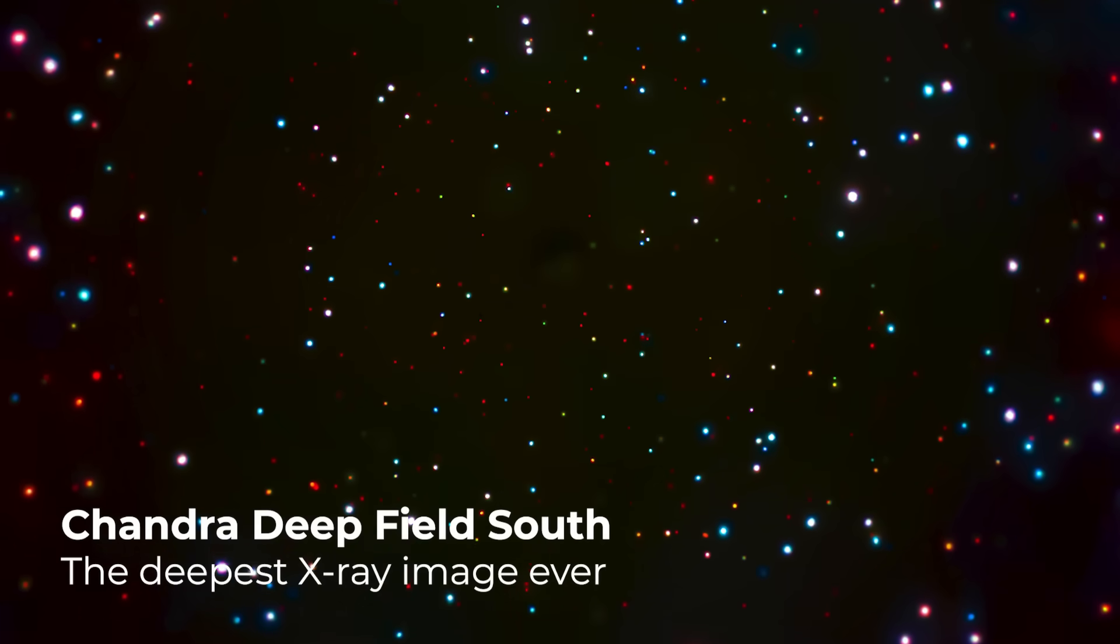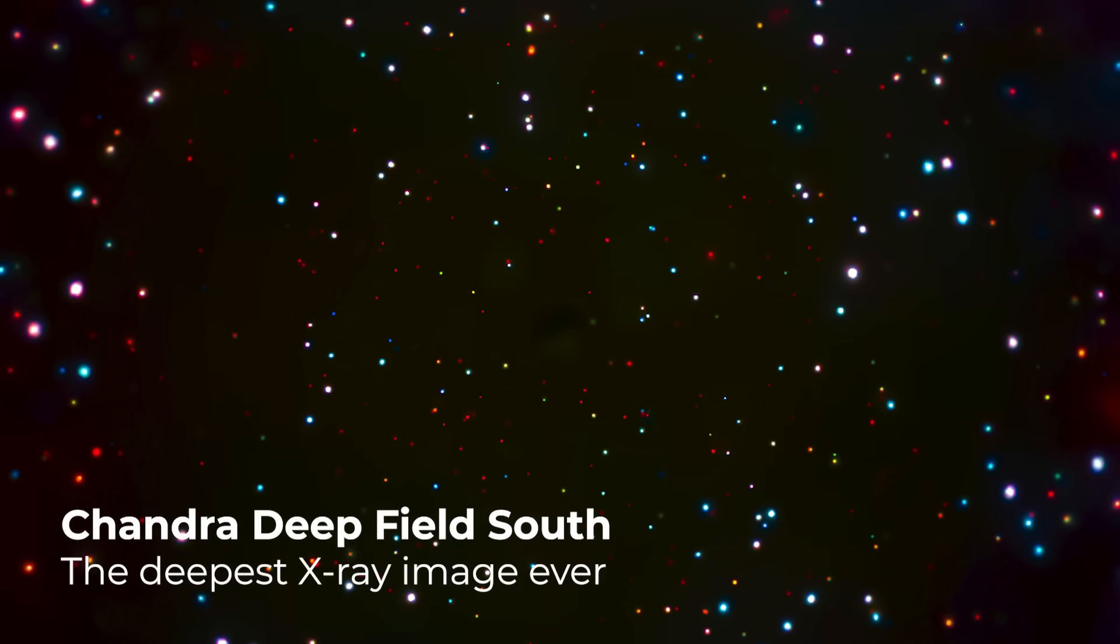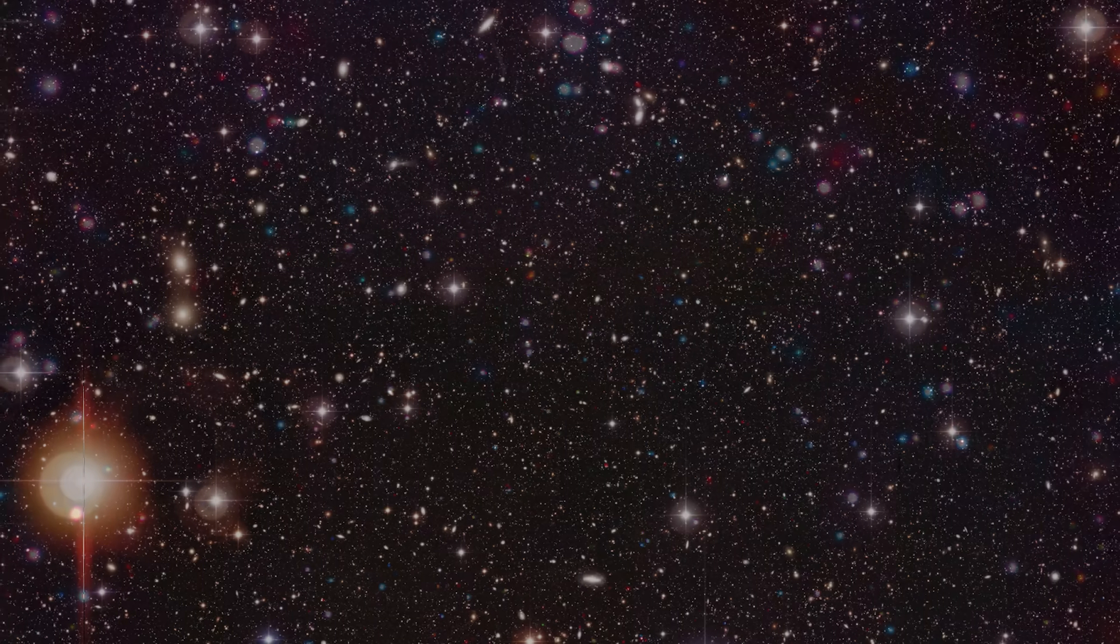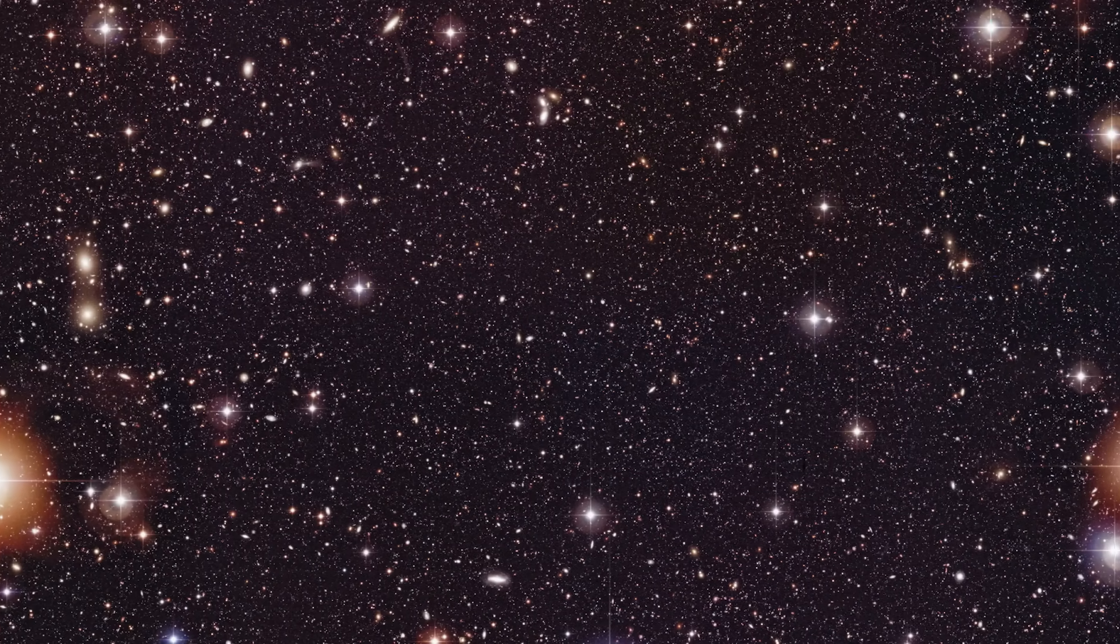That's because it overlaps the famous Chandra Deep Field South, a tiny patch of sky just 0.11 square degrees that has been studied in incredible detail over the past two decades by multiple ground-based and space observatories.